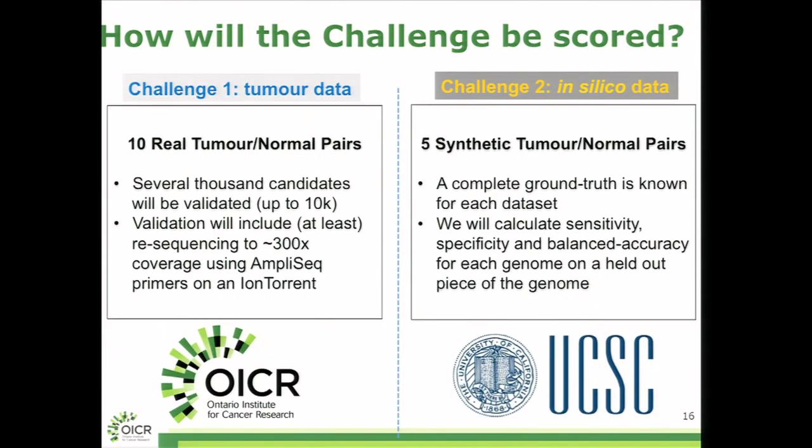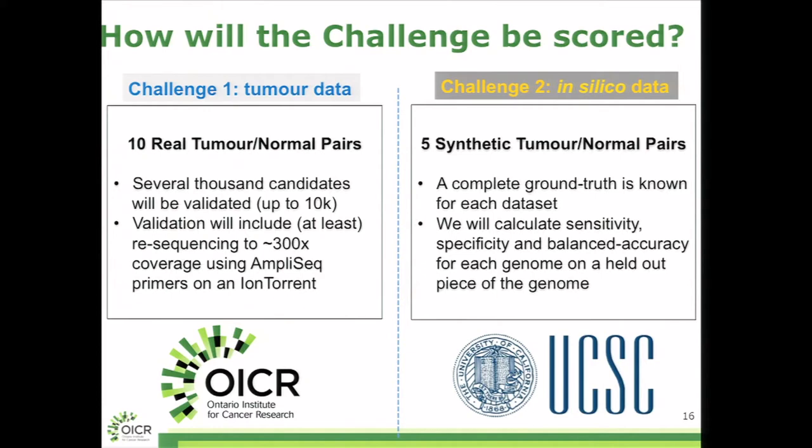The challenge is being scored in different ways. For the real tumor normal pairs, we're waiting until all the results are available. Then we're doing a random selection of results, basically trying to balance across intersections between groups. Those are receiving deep resequencing on an alternative platform. It's ion torrent because the initial discovery was on an Illumina. For the synthetic data sets, of course, ground truth is immediately known. We expect to have the final results by about November for an announcement of the winner. We'll be in the validation phase with the contest closed for challenge entries by July.